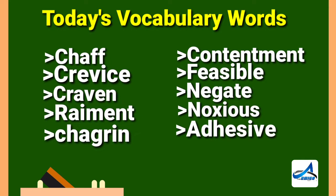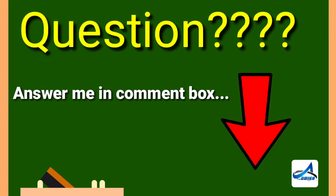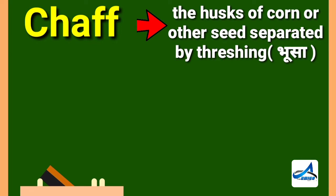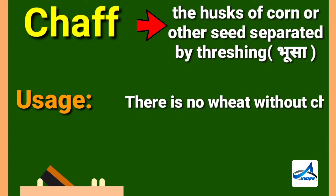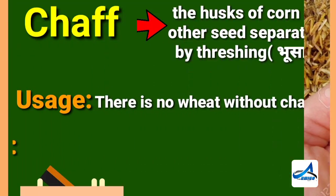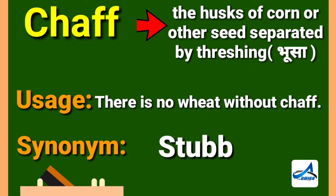Look at our first word: chaff. Chaff means the husk of corn or other seed separated by threshing. Its Hindi meaning is 'bhoosa.' Now look at its sentence: there is no wheat without chaff. Its synonym is stubble.